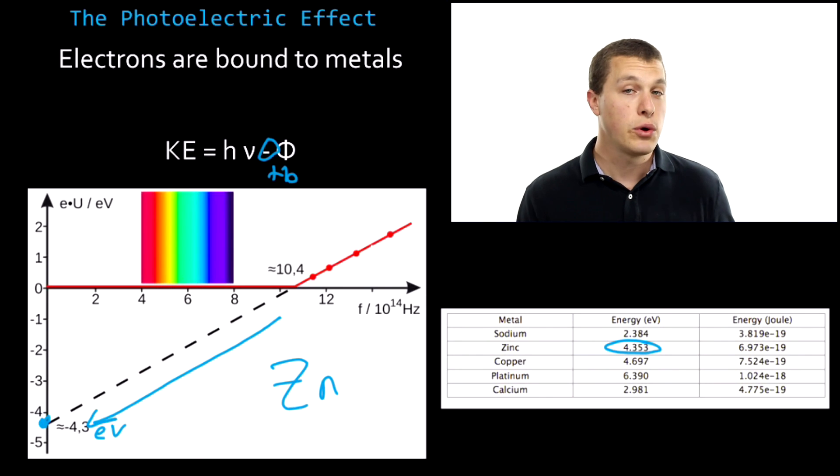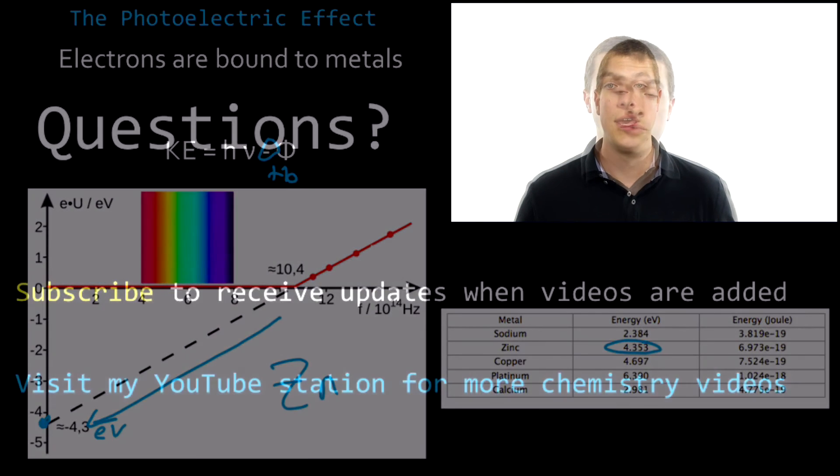All right, so let's review. The photoelectric effect was a very important experiment that taught us to think about light as particles. And those particles have energy proportional to their frequency. If we do a photoelectric effect experiment, we can actually use the binding energy to figure out what metal we have. And that actually has all sorts of applications.